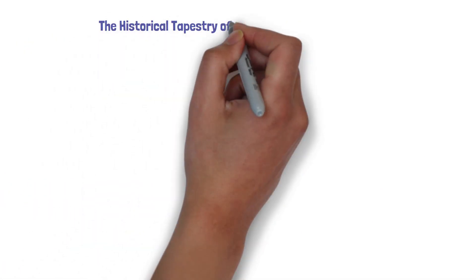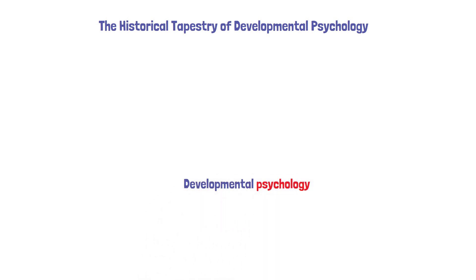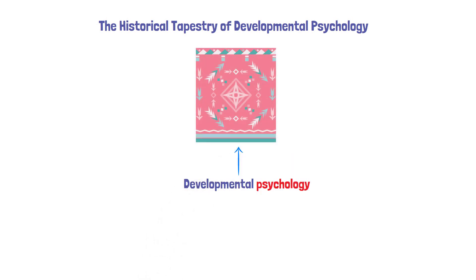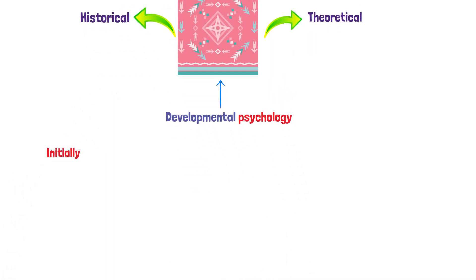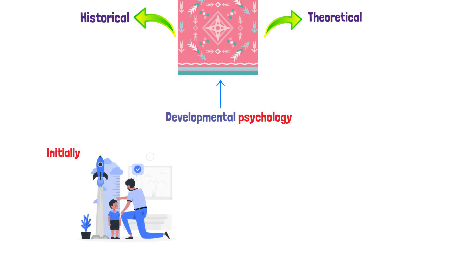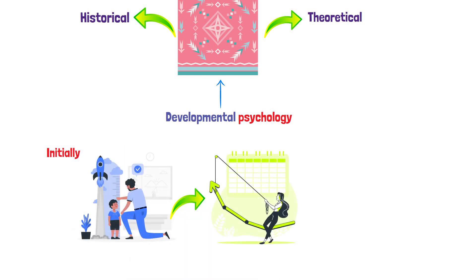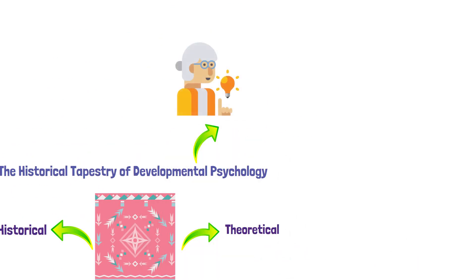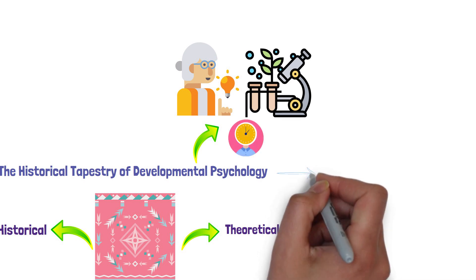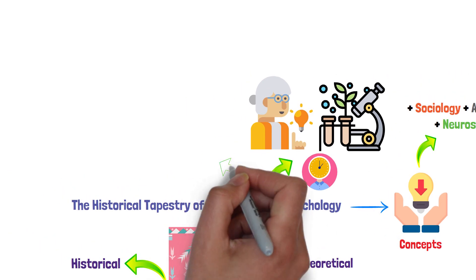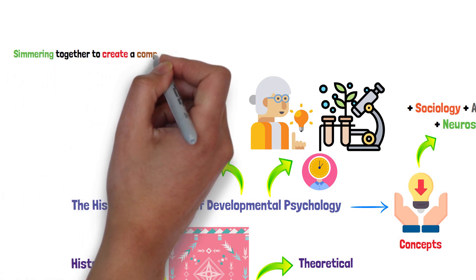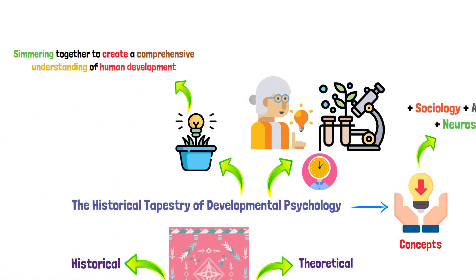The historical tapestry of developmental psychology. Imagine developmental psychology as a rich tapestry, woven with threads from various historical and theoretical backgrounds. Initially, it was all about observing physical growth and behavior changes, but soon this expanded to include mental, emotional, and social development. The field has roots in philosophy and biology, and over time it has borrowed concepts from fields as diverse as sociology, anthropology, and neuroscience. It's like a melting pot of ideas, simmering together to create a comprehensive understanding of human development.